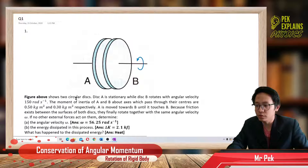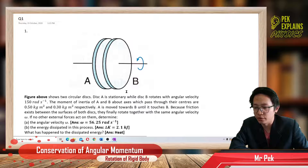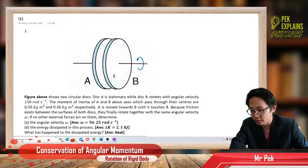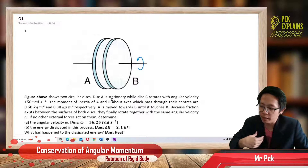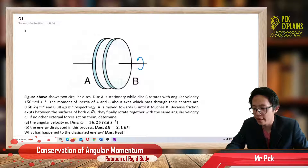The figure above shows two circular disks. Disk A is stationary, while disk B rotates with angular velocity of 150 radians per second. The moment of inertia of A and B about the axis passing through their centers are 0.5 and 0.3 kilogram meter squared respectively.